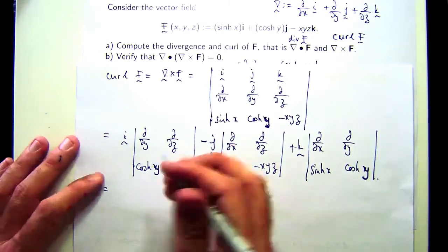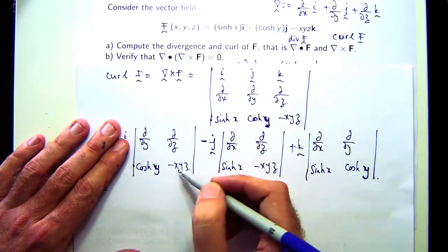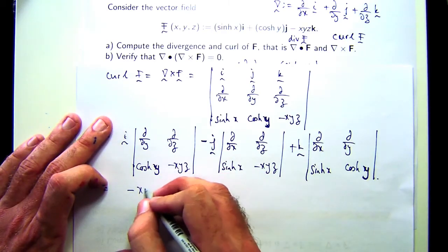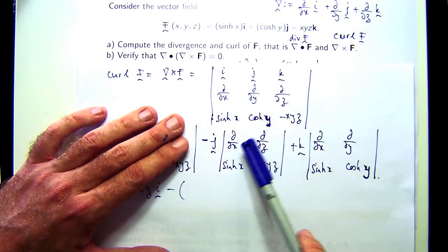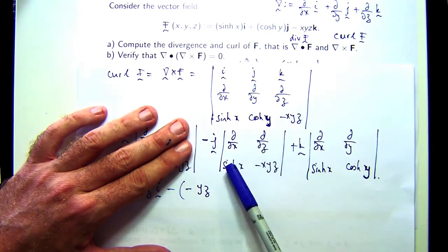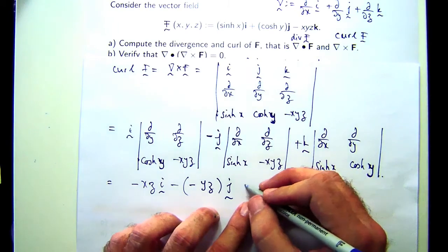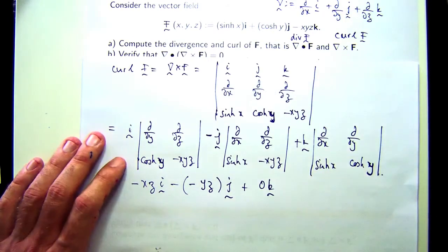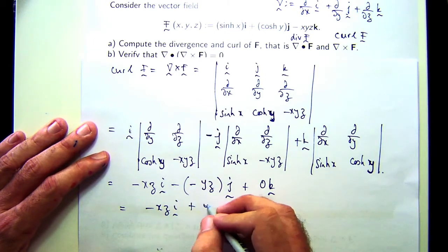Looks like a lot of calculations, but they're pretty simple actually. So ddy of that is going to be negative xz. ddz of that is going to be zero. In this first element, it's going to be that. Move on to the j. ddx of that is going to be negative yz. ddz of that is going to be zero. And finally, move on to the k. ddx of that is going to be zero, ddy of that is going to be zero. So that's just going to disappear. It's going to be negative xzi plus yzj.